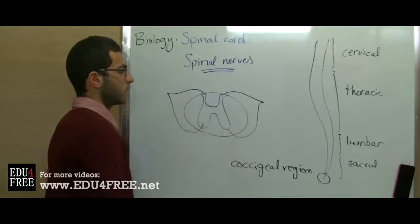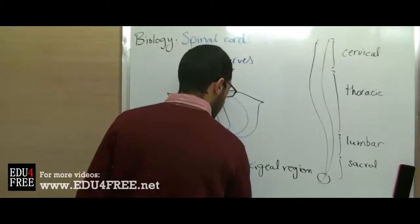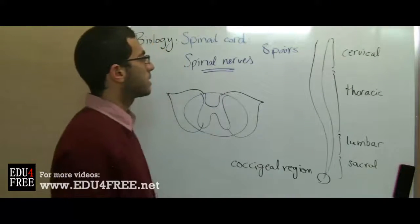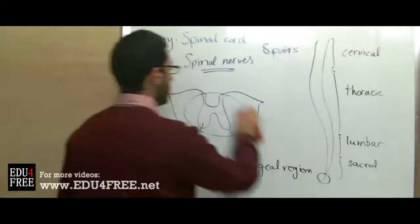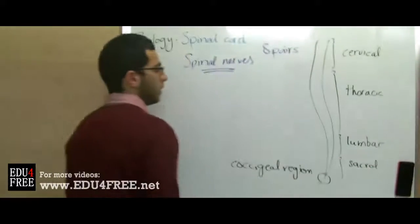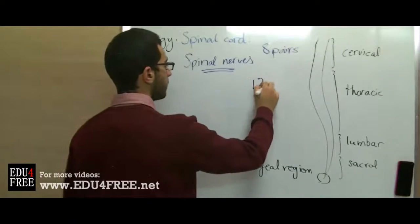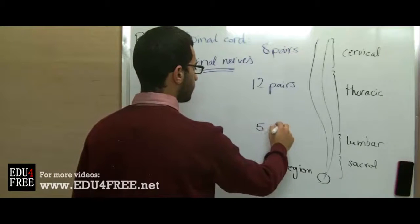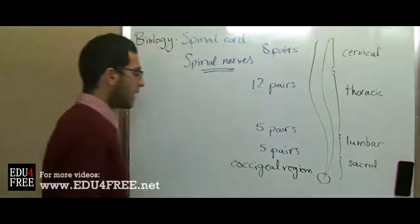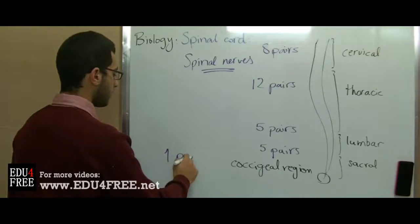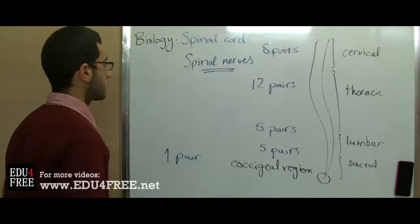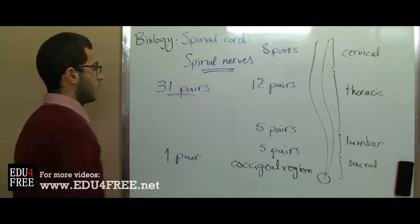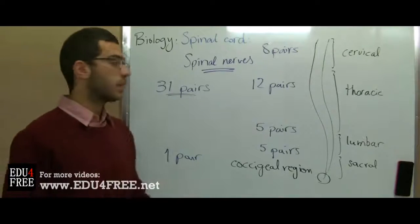On both sides of the spinal cord there are nerves. From the cervical region there are 8 pairs of nerves, meaning 16 nerves in total from that region. In the thoracic region we have 12 pairs. The lumbar and the sacral each have 5 pairs. At the coccygeal region there is only 1 pair. So the total pairs of nerves that originate from the spinal cord is 31 pairs, while the cranial nerves are 12 pairs.